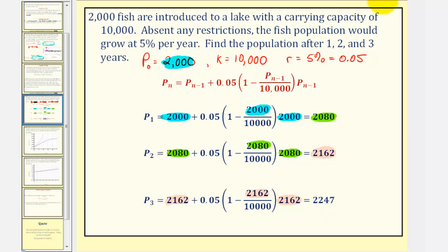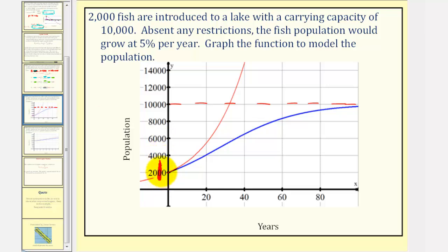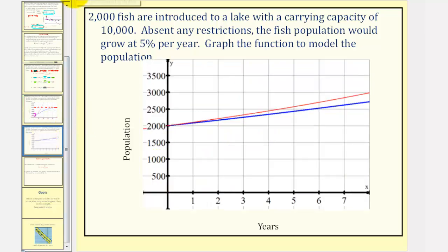Now let's look at this graphically. The blue graph models the logistic growth, and notice the carrying capacity of 10,000 is shown. As the population approaches 10,000, the growth rate slows. In comparison, the red graph shows the exponential growth without any restrictions. If we zoom in, we can see that for a short period of time the logistic growth and the exponential growth are very similar, but as time passes the logistic growth rate slows while the exponential growth rate does not.